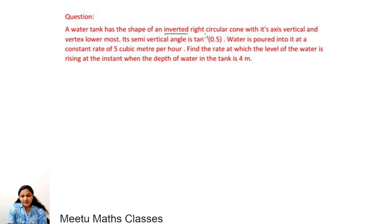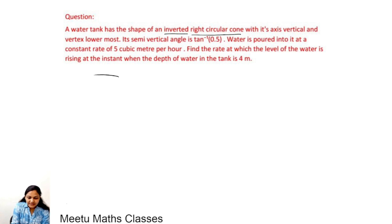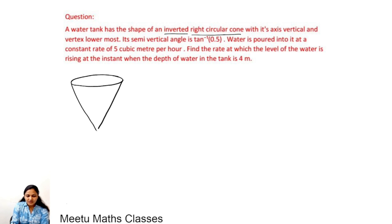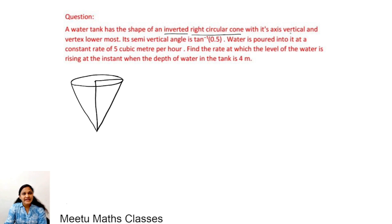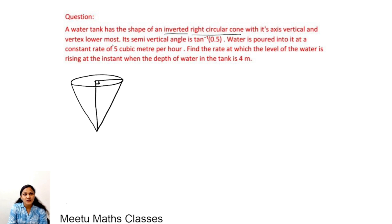What do we mean by an inverted right circular cone? A right circular cone is one whose base is perpendicular to the height. Inverted means whose vertex is downwards. So this is your inverted right circular cone with its axis vertical, vertex at the lowermost point.